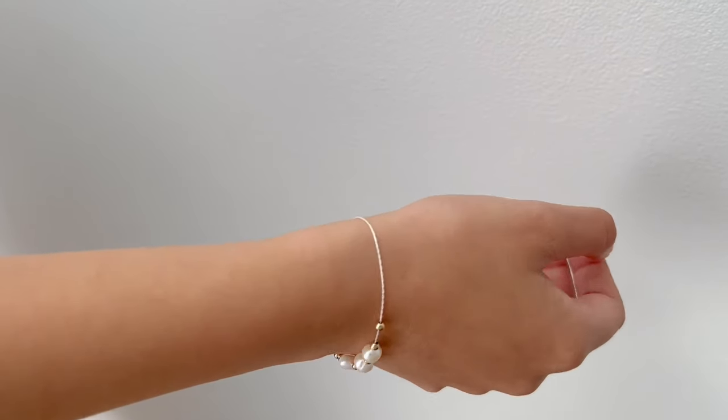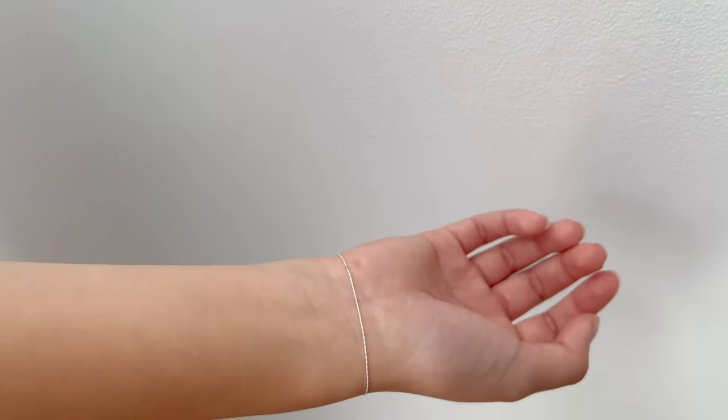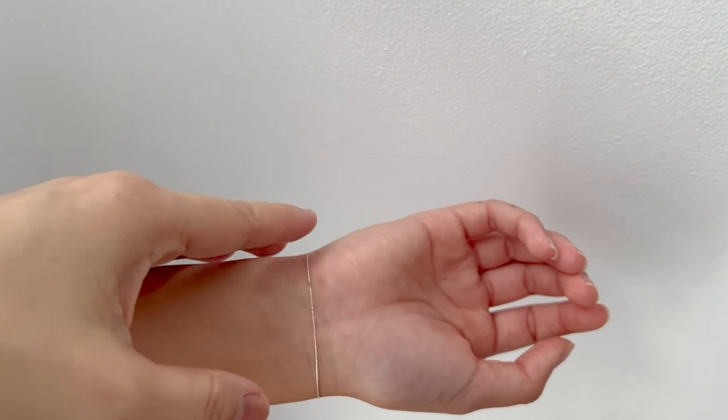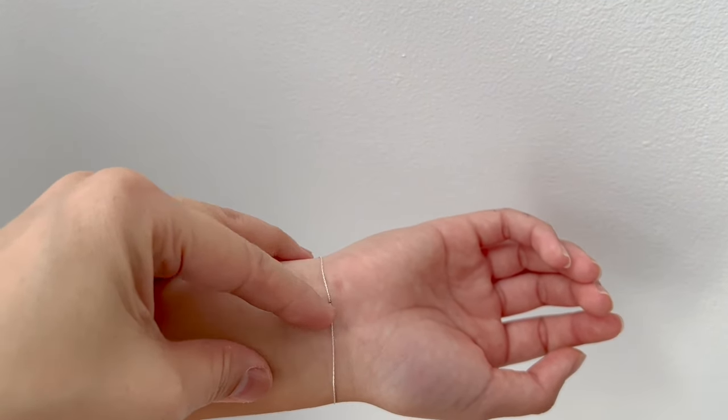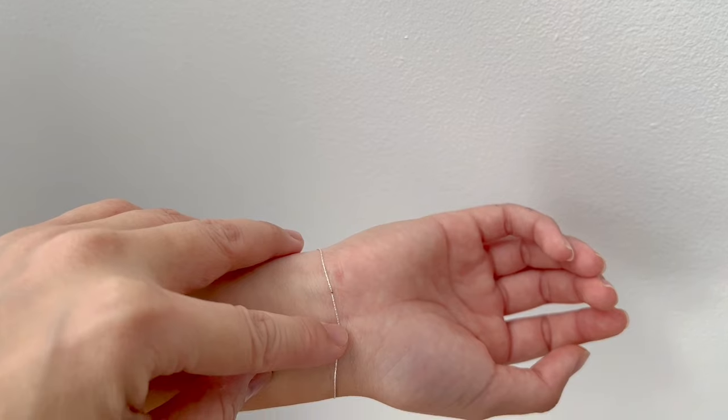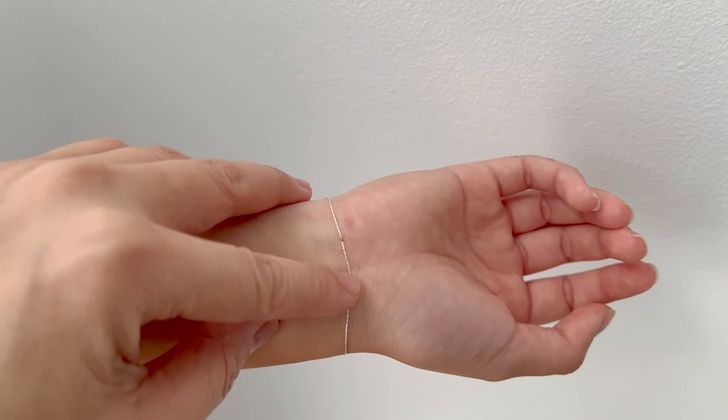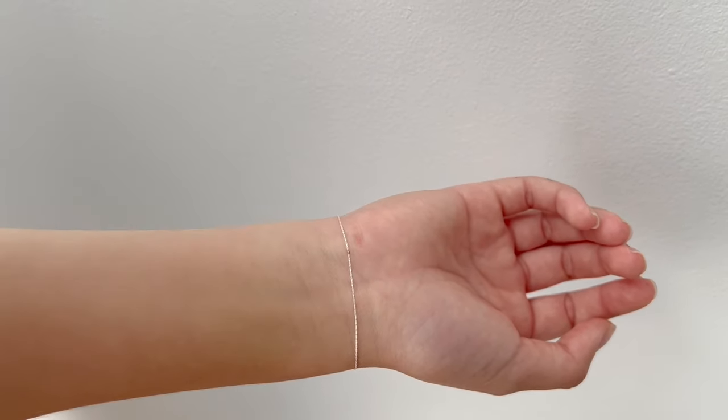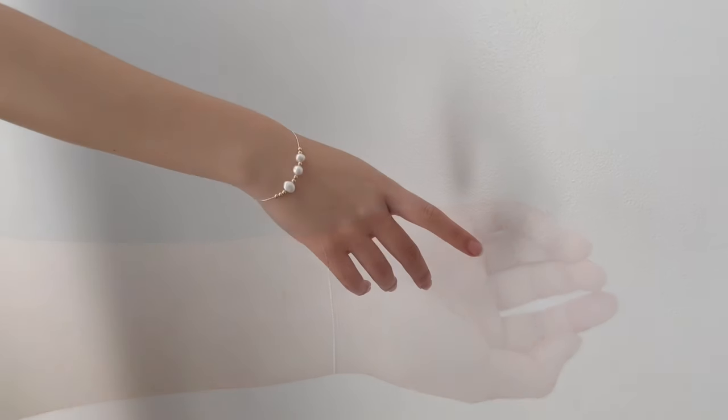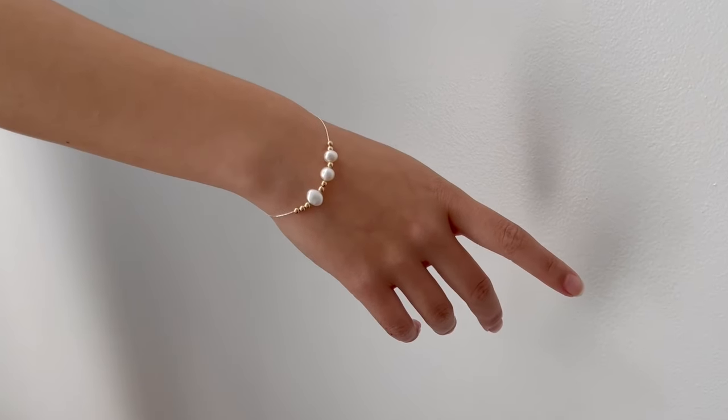So this is the final result with a permanent and inconspicuous closure. This chain is sterling silver and it's made in Italy. I'm going to put below a link with more information as well as information on the Orion micro welder that I've used.